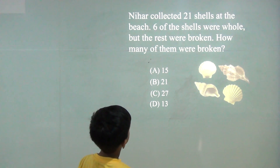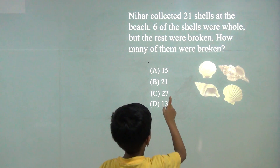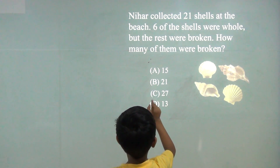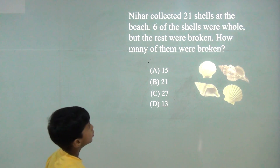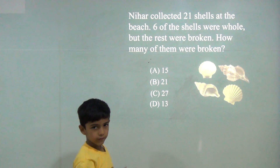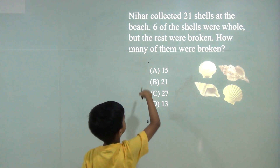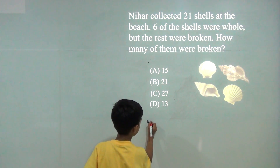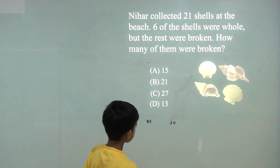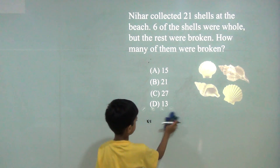We collected 21 shells at the beach. Six of the shells were whole but the rest were broken. How many of them were broken? So 21 minus 6. We will do 21 minus 1, so 6 minus 1 will become 5. 20 minus 5 is 15. So the answer would be 15.